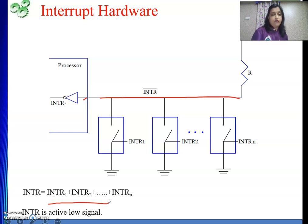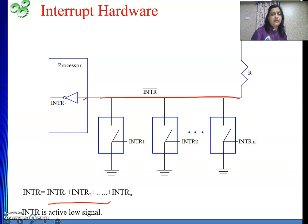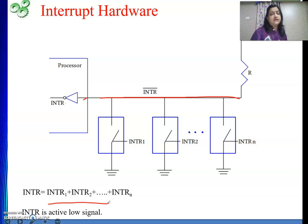Now the processor knows there is an interrupt request, but it still needs to find out which device placed the request, since there are multiple sources. How to identify who placed the request will be covered in upcoming videos. So in this video we have discussed three things: interrupt latency, the sequence of events in response to an interrupt, and how multiple interrupt sources share a single processor line.